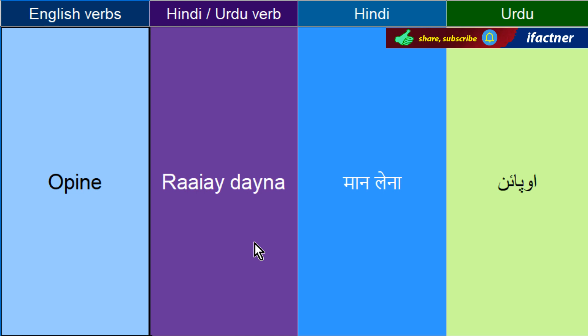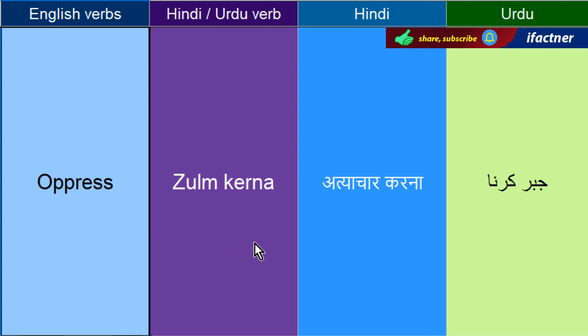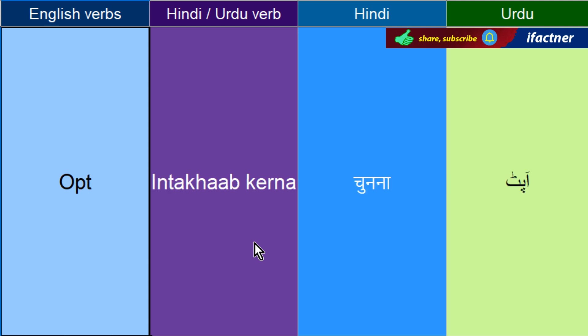Raay dayna ko kehthay hain — Opine. Zurm kerna, jabber kerna ko kehthay hain — Oppress. Kisi cheez ka intekhaab kerne ko, choose kerne ko kehthay hain — Opt. Opt in ya phir opt out.